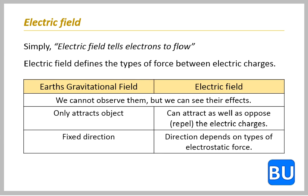Electric field defines the types of force between electric charges. That means the force can either be attractive or opposite. The point to be noted that Earth's gravitational field only attracts the objects. But electric field can attract as well as oppose electric charges.